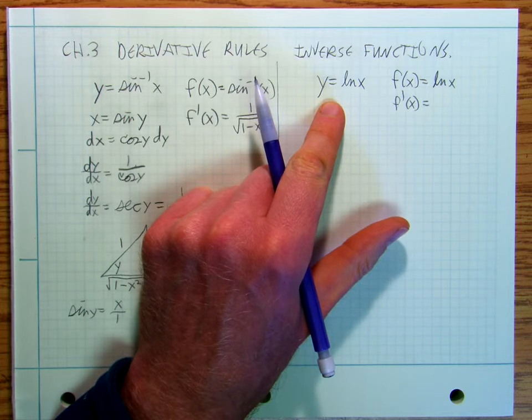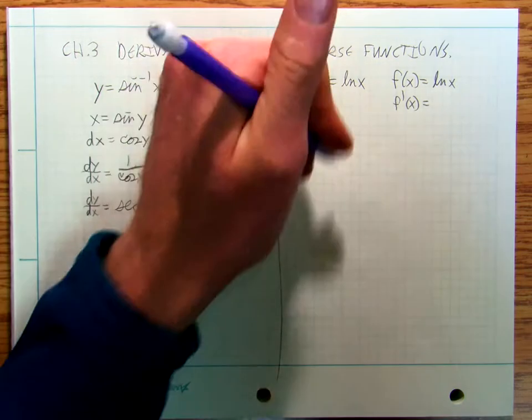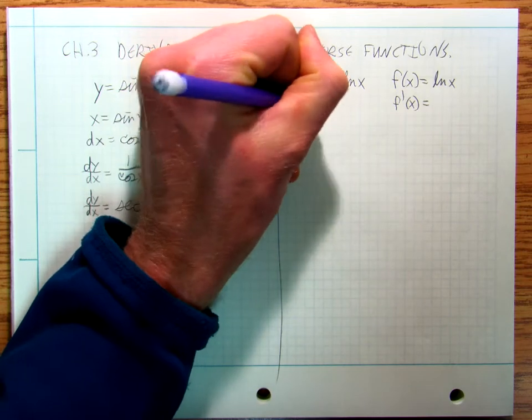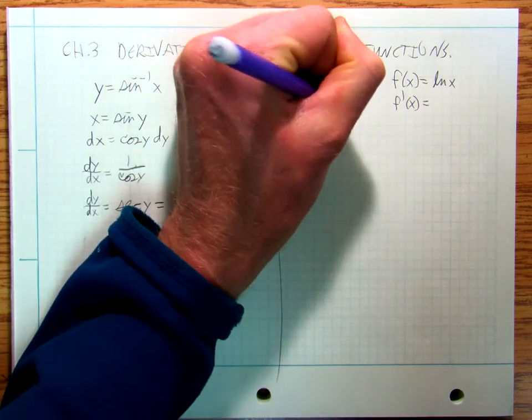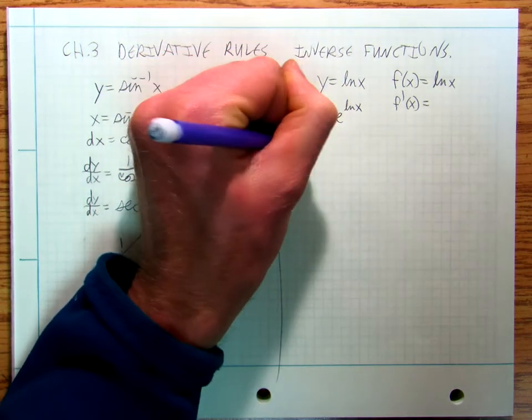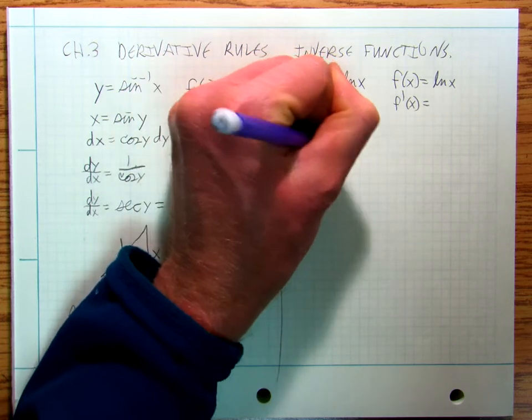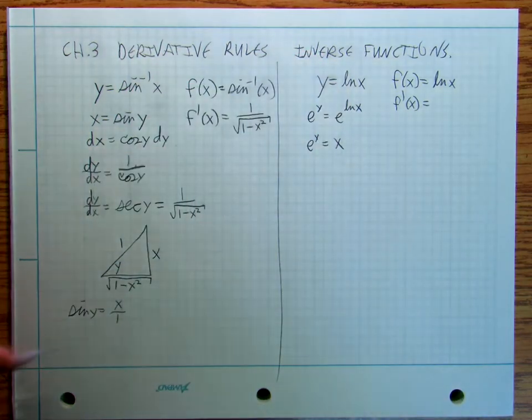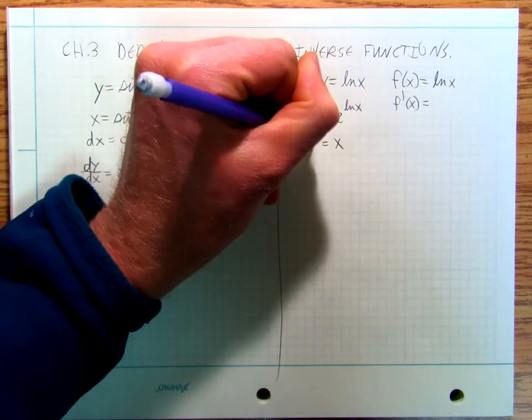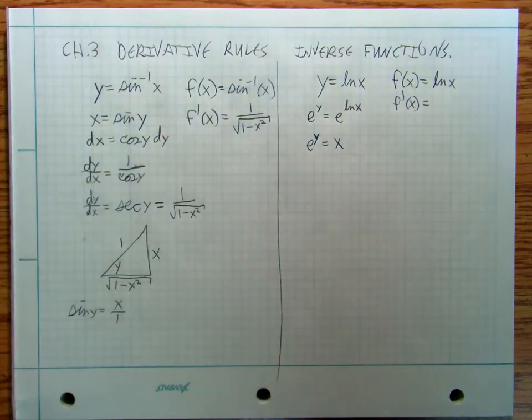The inverse of ln is e to the power. So I can go e to the y equals e to the ln x. So e to the y is equal to x. And then I can do my derivatives here.